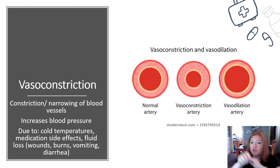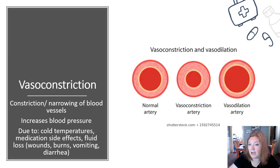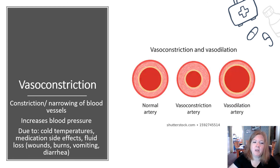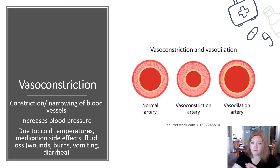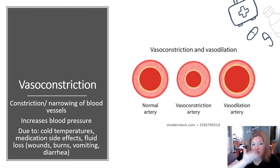Vasoconstriction is the narrowing of blood vessels — it increases blood pressure. If you are hypotensive, your body constricts blood vessels to raise your blood pressure back up. Causes include cold temperatures, medications, and fluid loss from wounds, bleeding, burns, vomiting, or diarrhea — too much fluid loss causes blood vessels to constrict to try to elevate blood pressure.